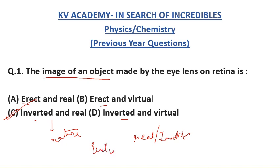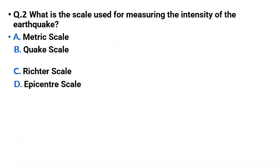The virtual option can be eliminated since the image is real and inverted — that is the correct answer. Next, question number two: What is the scale used for measuring the intensity of an earthquake? The options are metric scale, quick scale, Richter scale, and epicenter scale. The correct answer is option C — we use the Richter scale.